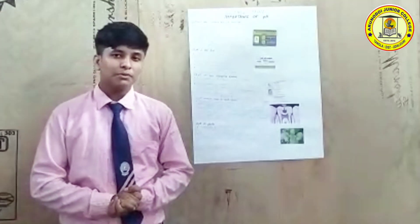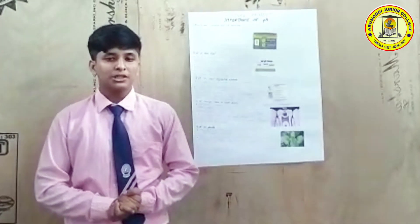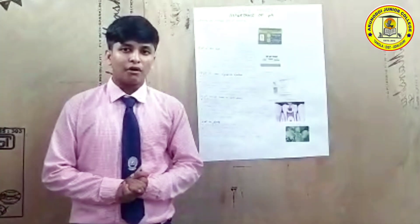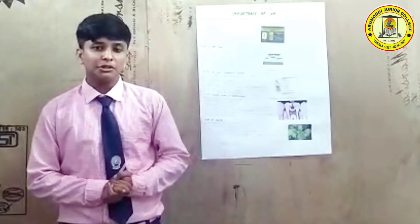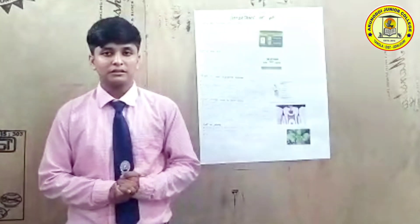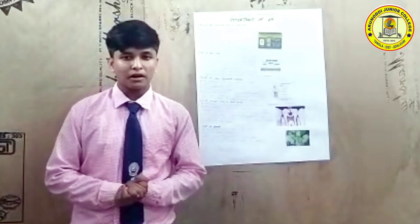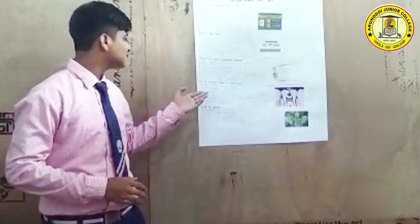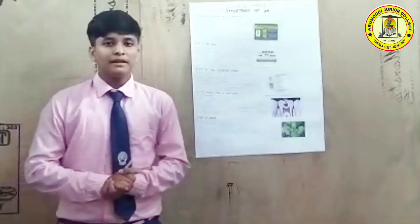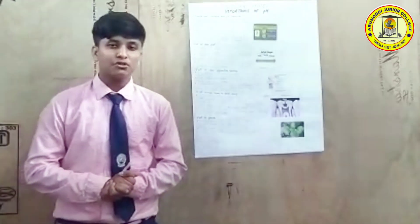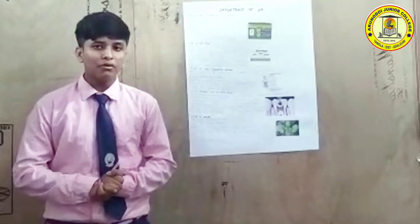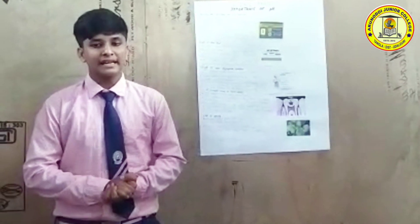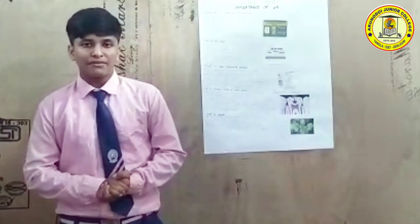Regarding pH in our digestive system: our stomach produces hydrochloric acid, meaning its pH is less than 7. Excess production of acid by the stomach causes pain and irritation, and we usually take antacids to get rid of this pain. Regarding pH change and tooth decay: after eating, bacteria in the mouth start producing acid due to the breakdown of sugar and food particles. Below pH 5.5, the enamel — made of calcium phosphate, the hardest substance in the body — starts decaying. It is therefore advised to clean the mouth after eating using toothpaste.